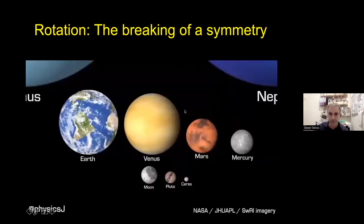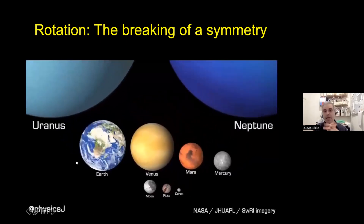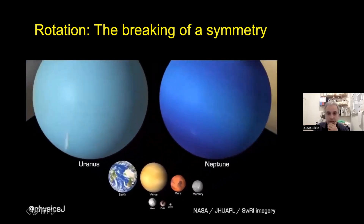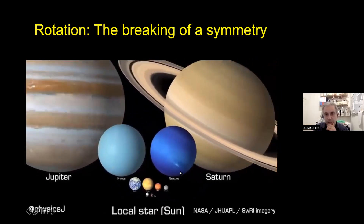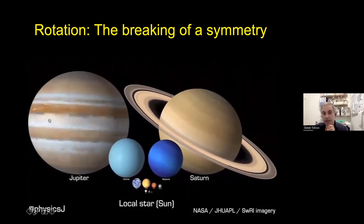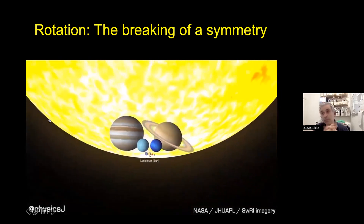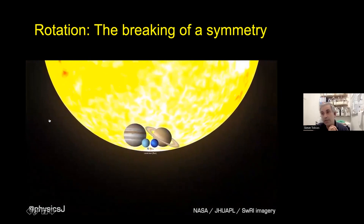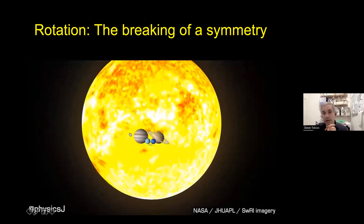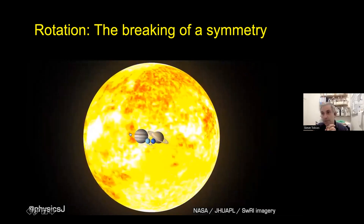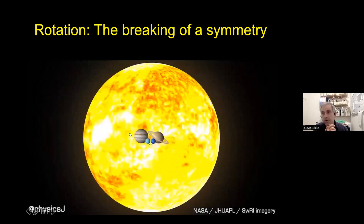Rotation is going to be really important here. You can see the rotation rates of these bodies — Earth is a fairly rapid rotator, Jupiter rotates around every nine hours. Here comes the Sun, which is quite a slow rotator — it goes around roughly once a month, about 30 times slower than Earth. Rotation is going to give a handedness to the convective turbulence that leads to the generation of a large-scale field, as opposed to just small-scale random fields.